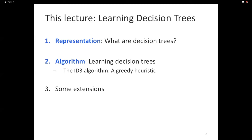Just a brief reminder: decision trees are a data structure where every node represents some sort of question about an example, typically about a feature. Different options take you down to different nodes, giving you further questions, until eventually you reach a leaf node which contains a label. Given a new example, you start at the root, answer all the questions, and the leaf you end up at gives you the label. Prediction is easy — it's literally answering a set of questions. What we haven't talked about is learning, and that's the focus of today's lecture.